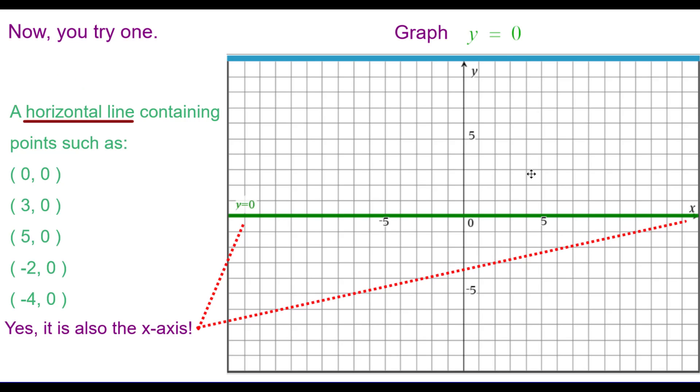Here is the graph of y equals 0. It is a horizontal line containing these points and others. Yes, it is also the x-axis. In fact, the x-axis has an equation y equals 0, and that's a good thing to know.